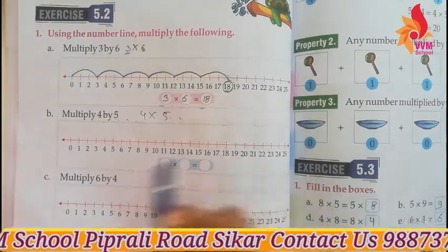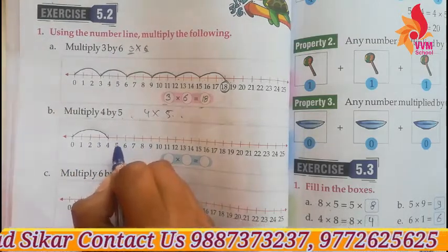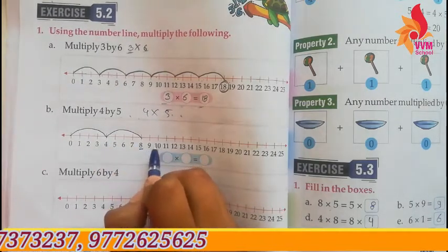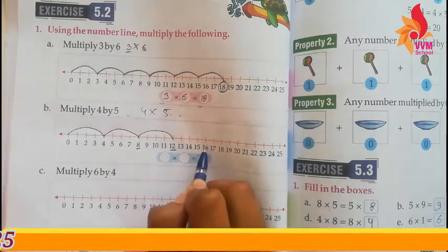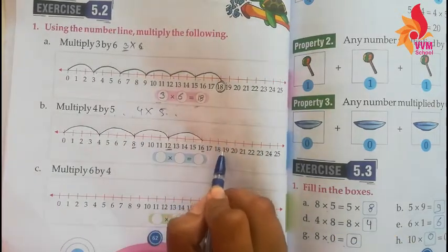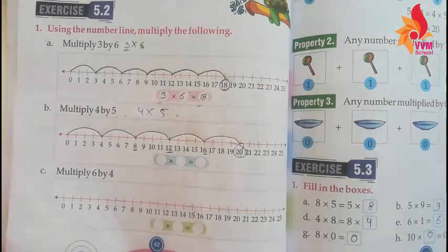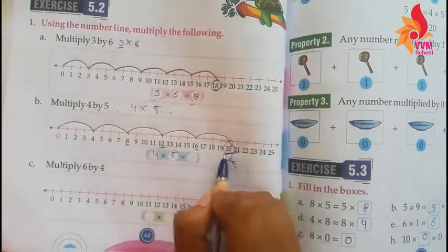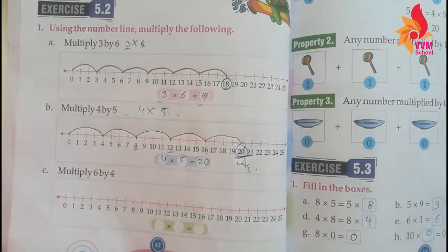We take a gap of 4 and move forward 5 times. From 0 to 4 is the 1st time. Then 4 more to 8 — 2nd time. Again 4 more — 3rd time. Again 4 more — 4th time. Again 4 more to 20 — 5th time. Where we stop is our answer. So when we do 4 into 5, the answer is 20. This is how we do multiplication on a number line.